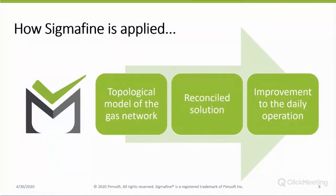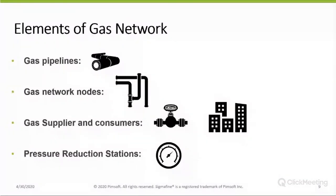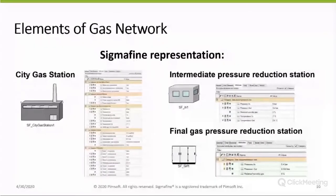Sigma Fine is applied following these steps. The first thing is to create a topological model of the gas network. Through the model, we find a reconciled solution in order to improve daily operations. Starting with the topological model, we need to know the elements of the gas networks. In this specific area, we have gas pipelines, gas network nodes, gas suppliers and consumers. Suppliers are the transmission and distribution networks, and as consumers we have businesses, homes and buildings, and pressure reduction stations.